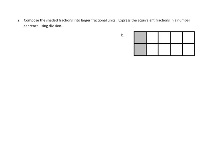Let's take a look at problem number two. Compose the shaded fractions into larger fractional units. Express the equivalent fractions in a number sentence using division. It looks like we have two shaded parts — two out of one, two, three, four, five, six, seven, eight, nine, ten — ten parts total. So it looks like we have two-tenths.